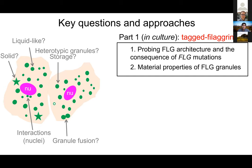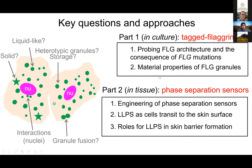We approached this work in two parts. In the first part, we took an engineered approach in which we tagged filaggrin itself or variants of filaggrin to probe the architecture of the protein and its phase separation behavior, particularly with regards to the mutations seen in patients. The second part was: how can we move this work from these simple systems to the skin itself? We had to come up with a strategy — phase separation sensors — to uncover these processes in the endogenous skin tissue without perturbing the endogenous process.